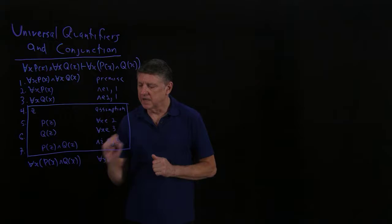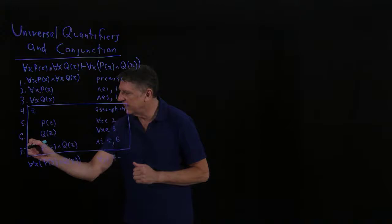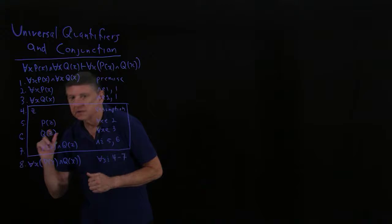That means that this line is justified. And it's a box that began at line 4 and ends at line 7. And so line 8 is the last line of my proof.